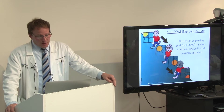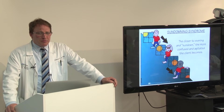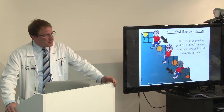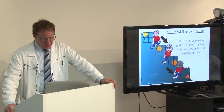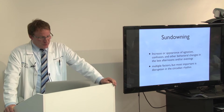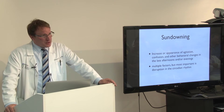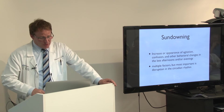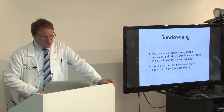Sundowning syndrome is a phenomenon where somebody who has cognitive impairment functions pretty well at the beginning of the day, but as the day progresses they become less and less able to manage things. They might become confused or agitated as the day progresses. Sundowning is defined as the increase or appearance of agitation, confusion, or other behavioral changes in the late afternoon or evenings. It's not a diagnosis in itself — just a phenomenon we see in patients with any form of dementia. The most important factor in sundowning is a disruption of the circadian rhythm, this natural sleep-wake cycle that we all have.